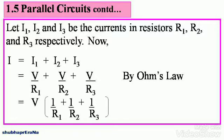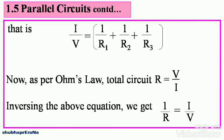By taking V as a common factor, we can write this as I equals V into 1 by R1 plus 1 by R2 plus 1 by R3. That is, if we take V transposed to the left hand side, we get I by V equals 1 by R1 plus 1 by R2 plus 1 by R3.